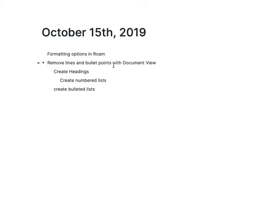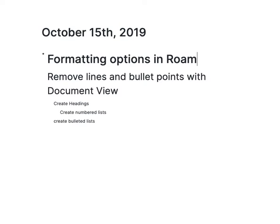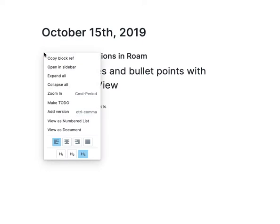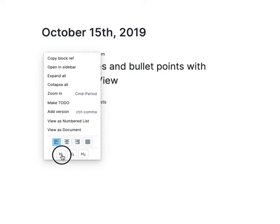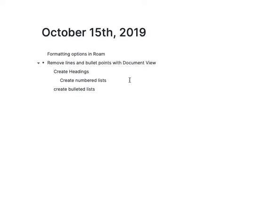If you're interested in having visual separation of things through headers, you can do so with Command Option 1 for H1, 2, and 3. You can also access those controls over here. Clicking them twice or hitting the same key command twice will remove those formattings.